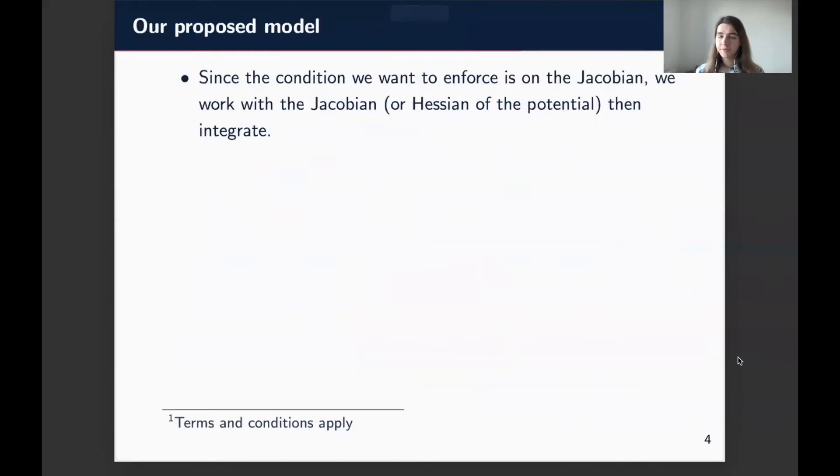So this condition basically gives us a way of checking if our vector field is a gradient of a convex function. But it operates on the level of the Jacobian. So what our approach with this model was, is that we work with the Jacobian itself, which would be the Hessian of the potential, and then we're going to integrate. So what does that look like?